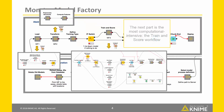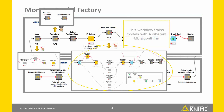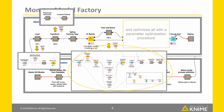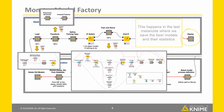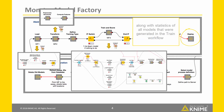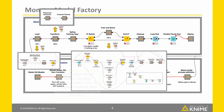The next part is the most computationally intensive: the Train and Score workflow. This workflow trains models with four different machine learning algorithms and optimizes all four of them with a parameter optimization procedure. This Train step is repeated 10 times. Next, the trained models are scored using the test data, and the model with the highest performance is picked for deployment. This happens in the last meta node, where we save the best models and their statistics along with statistics of all models generated in the Train workflow.